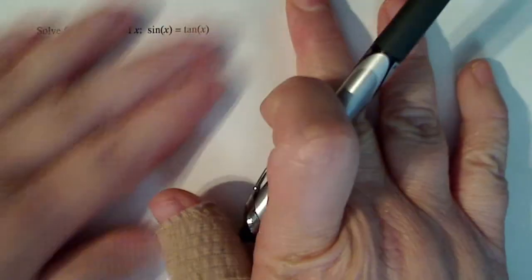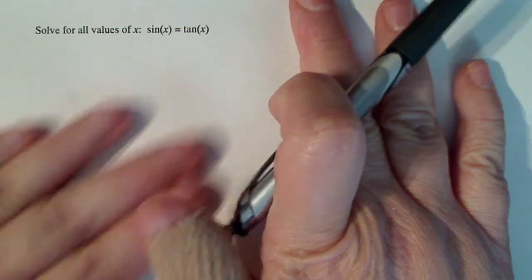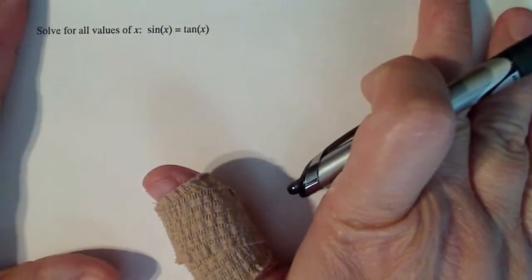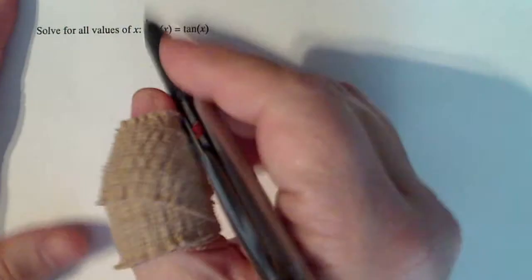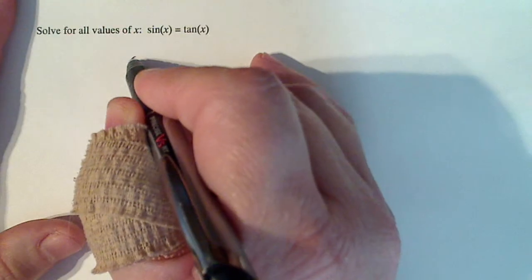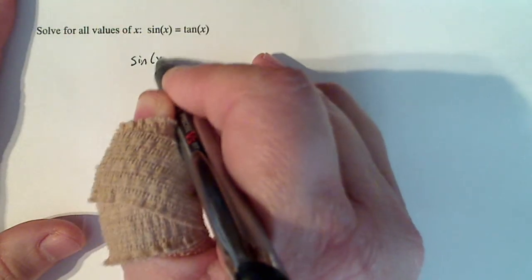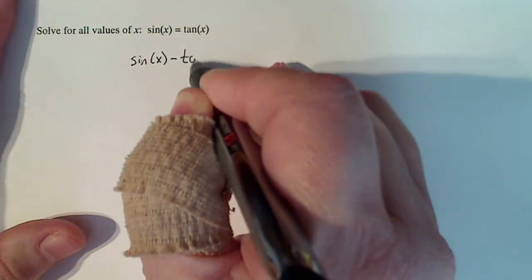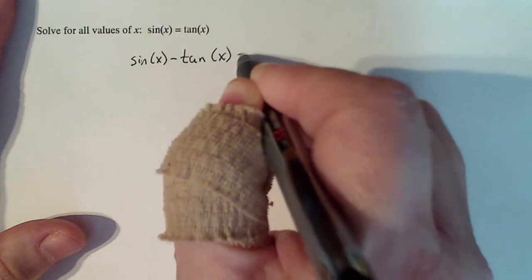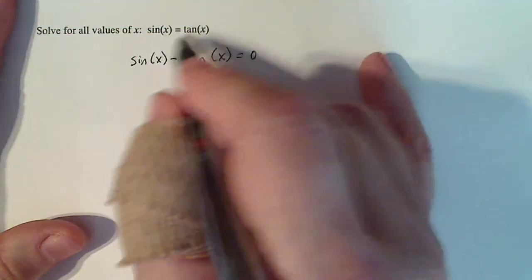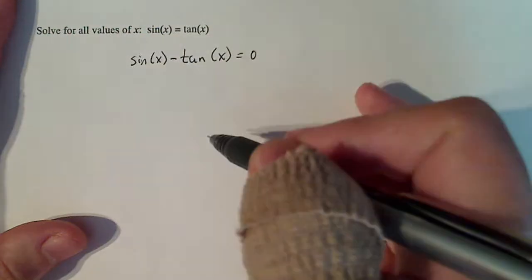So don't panic. It looks really deceptively simple. It's not crazy. Just follow the steps that work. The first thing I'm going to do is set the one side equal to zero by moving tangent x. Sine x minus tangent x equals zero.